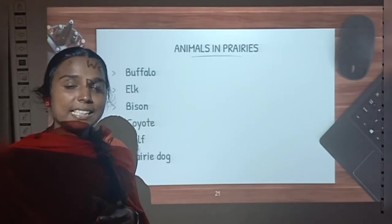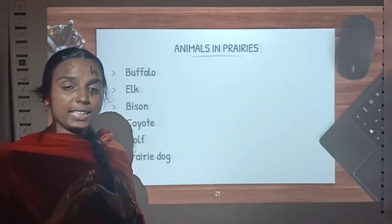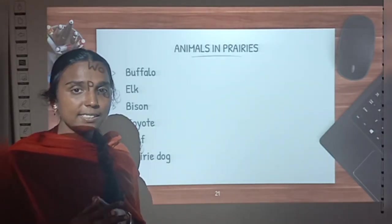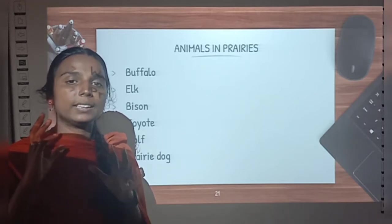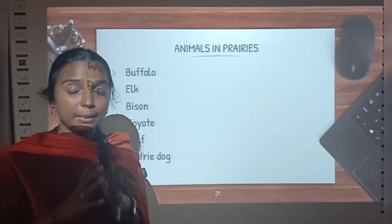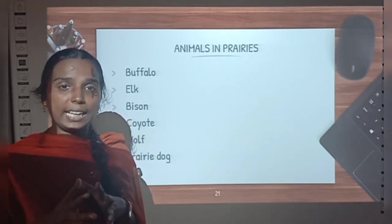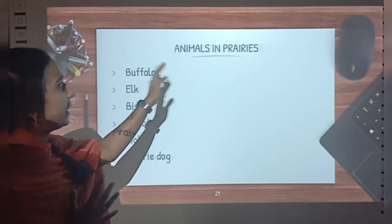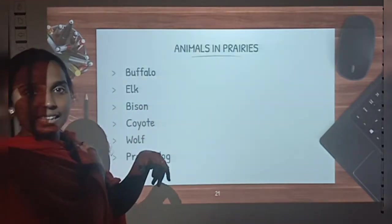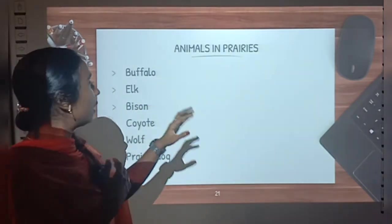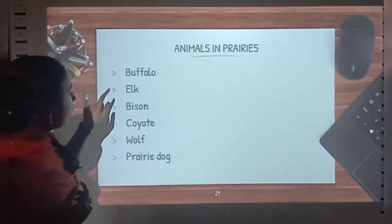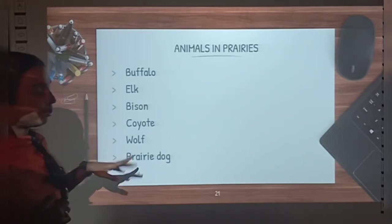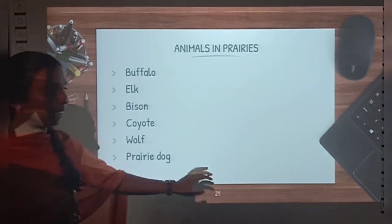Yes children, now shall we recap all the concepts from today's class. Today we discussed about animal life and the life of the people in the temperate zone. What are the animals we can see in prairies? Buffalo, elk, bison, coyote, wolf and prairie dog. And what are the animals we can see in pampas? Rhea, guanaco, grey fox and deer.